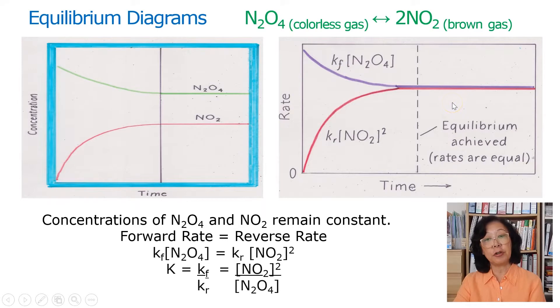If we rearrange the terms, we have a ratio between forward rate constant and reverse rate constant and a ratio between product concentration over reactant concentration. We arrive at the equilibrium constant K.